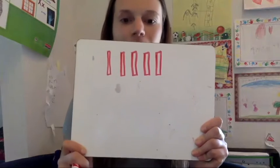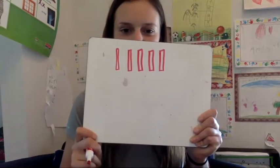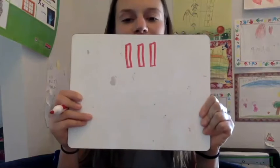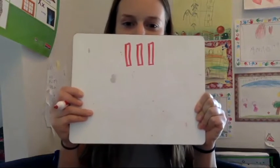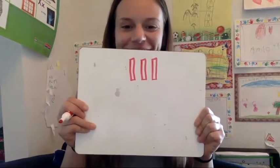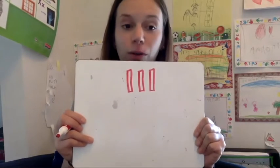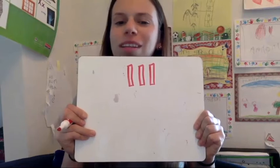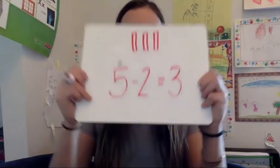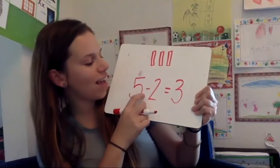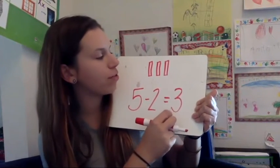Here's your first homework problem. How many rectangles do I have? How many rectangles did I take away? Write a number sentence to show what I did. Press pause while you do this, press play to check your work, press the rewind button if you want to see me take them away again. Here's my number sentence: I had five rectangles, I took away two, and now I have three left.